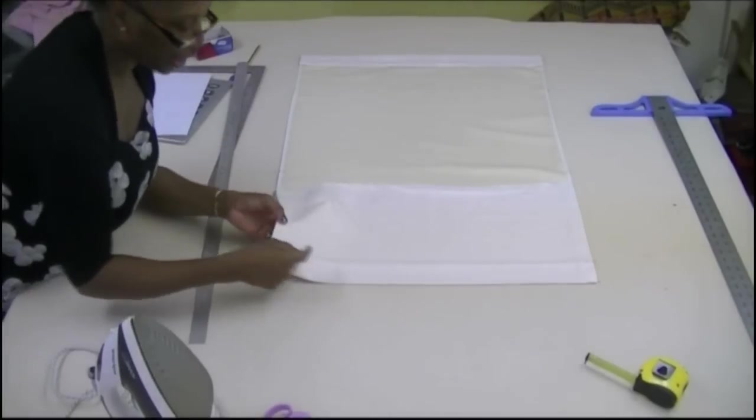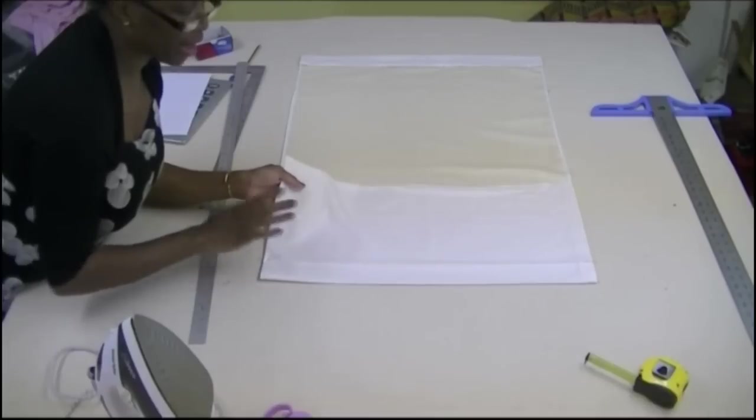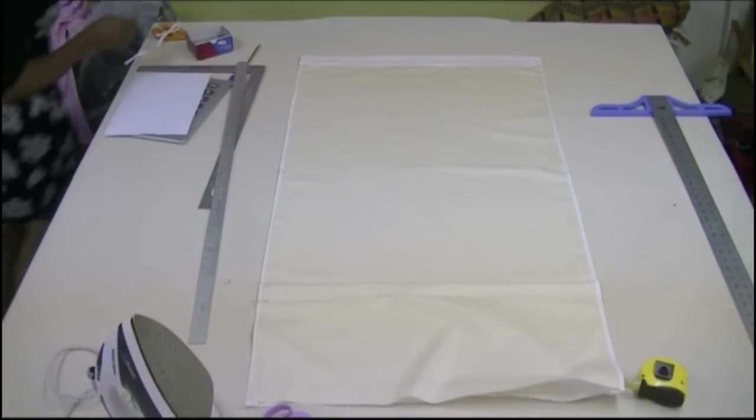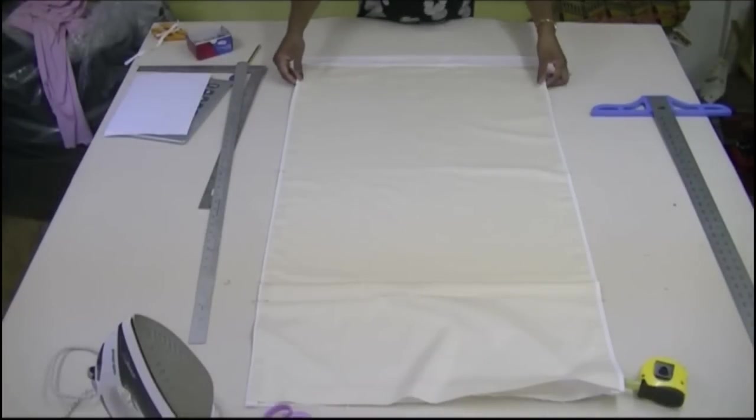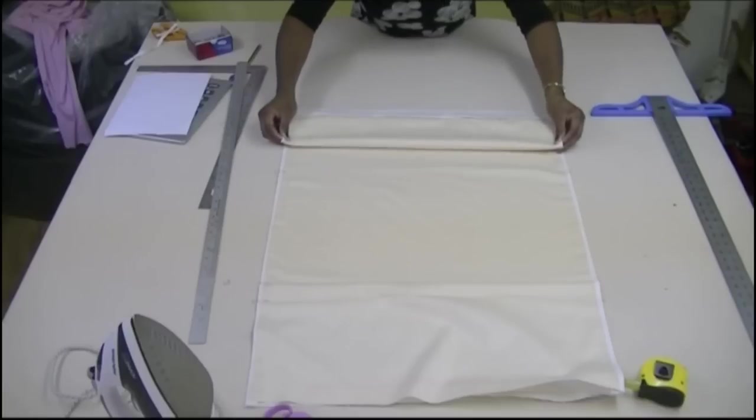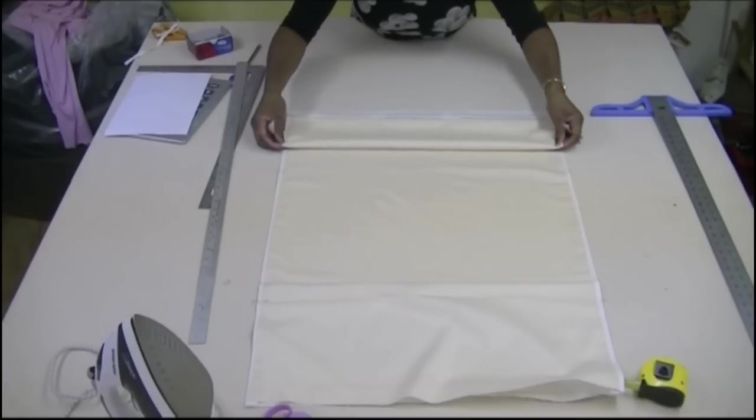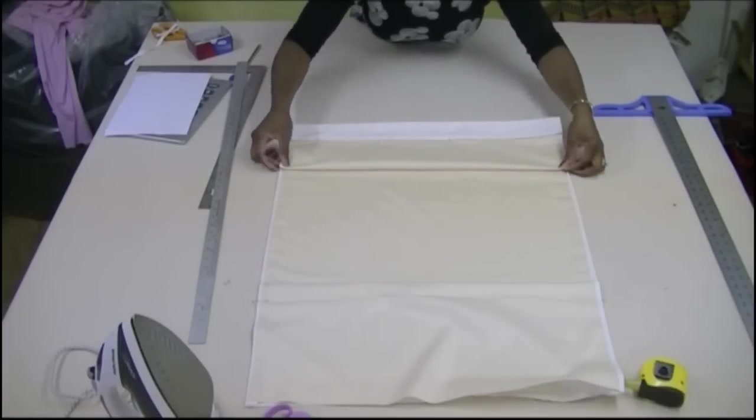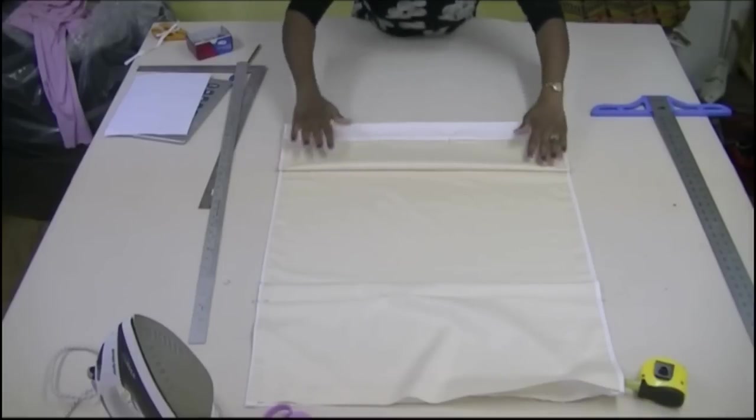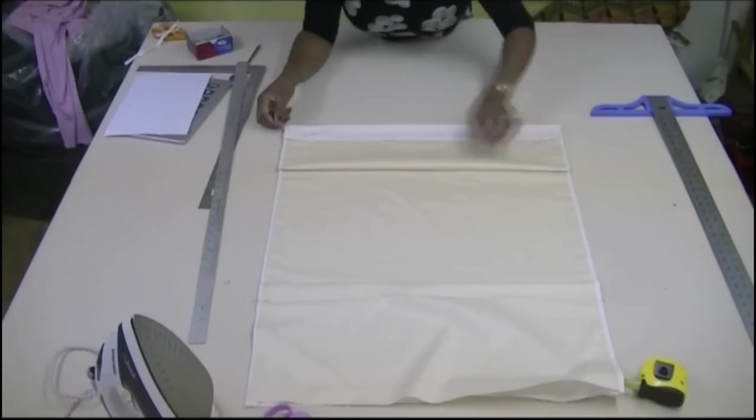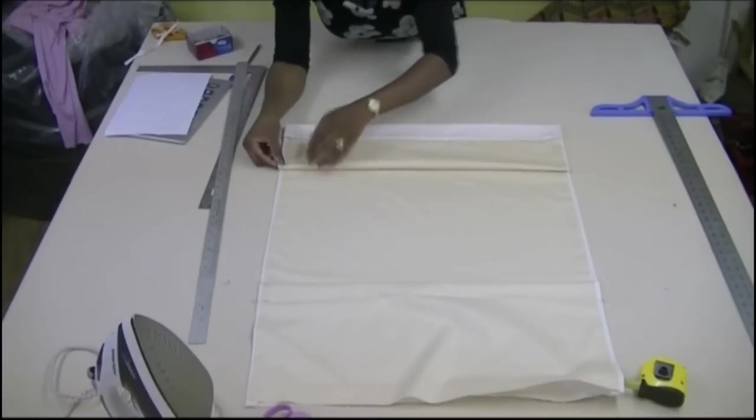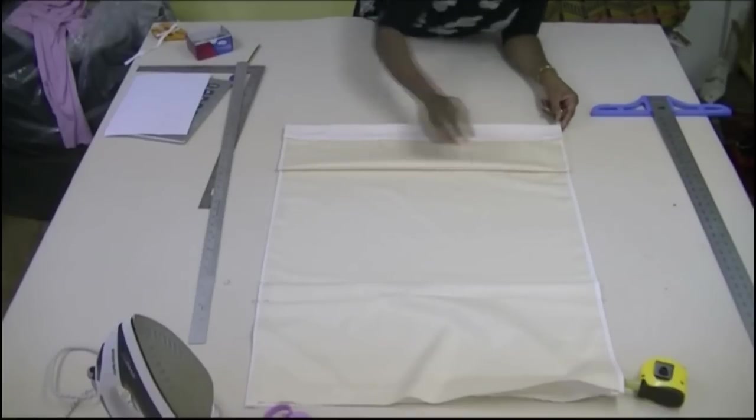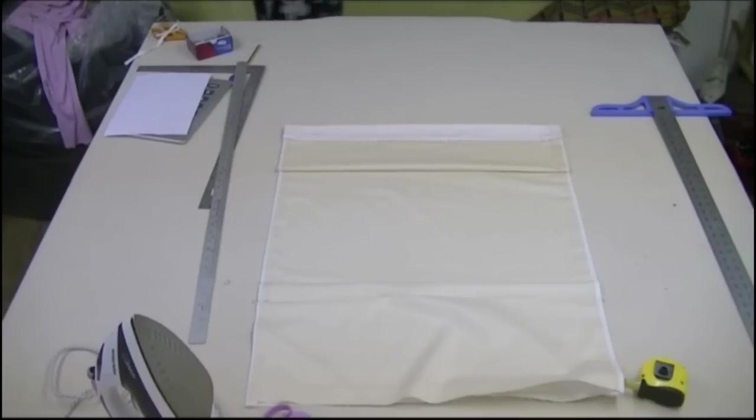Right so this two inch here is going to be tucked in and you'll see that in a minute but I don't want to cut this off yet because I want to make double sure that my measurements are right. So this is the first two, the first, so now I'm going to iron that. I brought it up to that 14 inch and that's looking fine. So I'm going to iron that one.